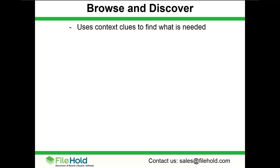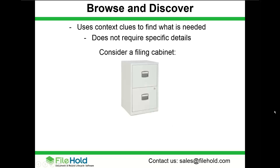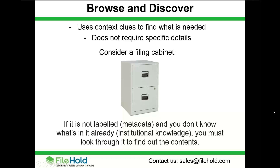When we talk about browse and discover, we're usually using a context clue to find what's needed. We may not know specifically where that piece of information is, but we use references around us to guide us to where it might be. This style does not require specific details about the document — for instance, you don't need to know an invoice number when browsing. Consider a filing cabinet: if it's not labeled, with no metadata about its contents, and you don't have institutional knowledge of what's in it, you have to physically look through it to discover what's inside.